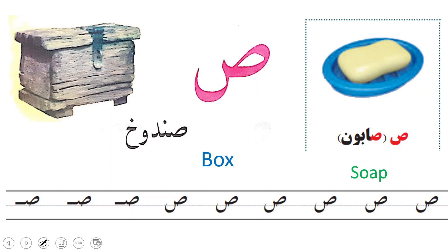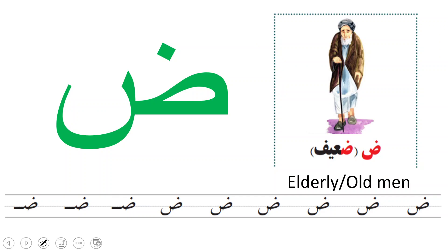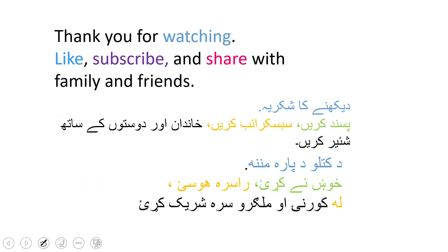Shabun means soap in English. We write Shawad like this. Zawad — shawad — zaif. Zawad means elderly or an old man. We write Zawad like this. Allah hafiz.